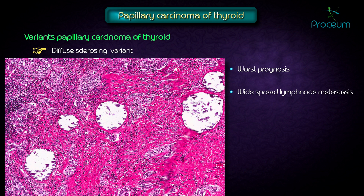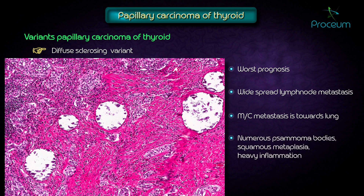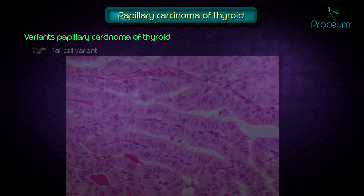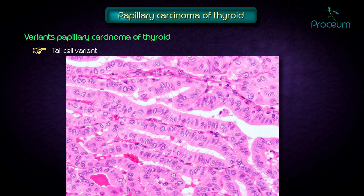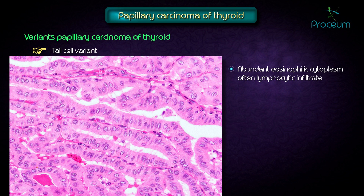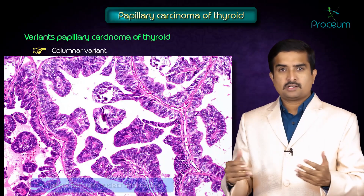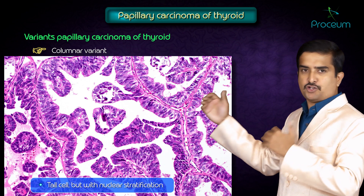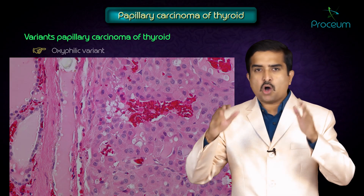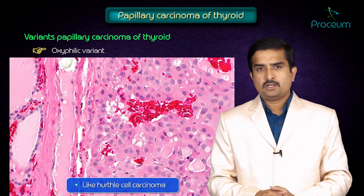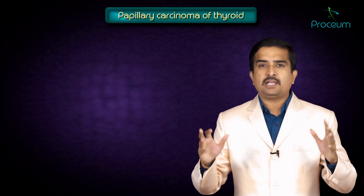The diffuse sclerosing variant has the worst prognosis due to widespread lymph node metastasis, with the most common metastasis site being the lungs. This type features numerous psammoma bodies, squamous metaplasia, heavy inflammation, and the differential diagnosis includes Hashimoto's thyroiditis. The tall cell variant has abundant eosinophilic cytoplasm, often with lymphocytic infiltrate, and also has a worse prognosis. The columnar variant is like tall cell but with nuclear stratification. The oxyphilic variant resembles Hurthle cell carcinoma.